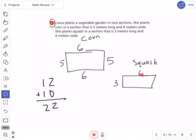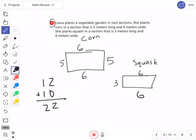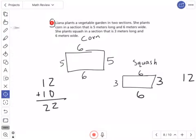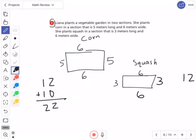Then I have to do the squash. The top is 6, the bottom is 6, left side is 3, right side is 3. 6 plus 6 is 12, 3 plus 3 is 6. Add them up: 2 plus 6 is 8, 1 plus nothing is 1. That's 18.